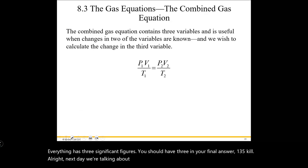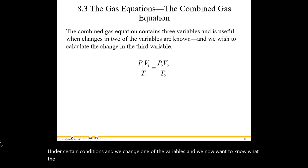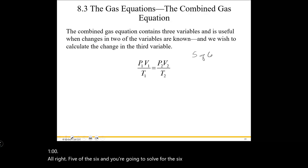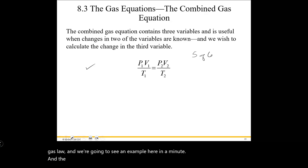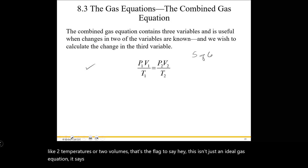Next we're talking about the combined gas law. This is when we take a gas under certain conditions, change one of the variables, and want to know what another condition becomes. There are six variables in the combined gas law. You have to know five of the six and solve for the sixth. This equation is important because many everyday-life events work off the combined gas law, not just the ideal gas law. The flag that tells you to use the combined gas law instead of the simple ideal gas equation is when you see multiple variables of the same type — like two temperatures or two volumes.